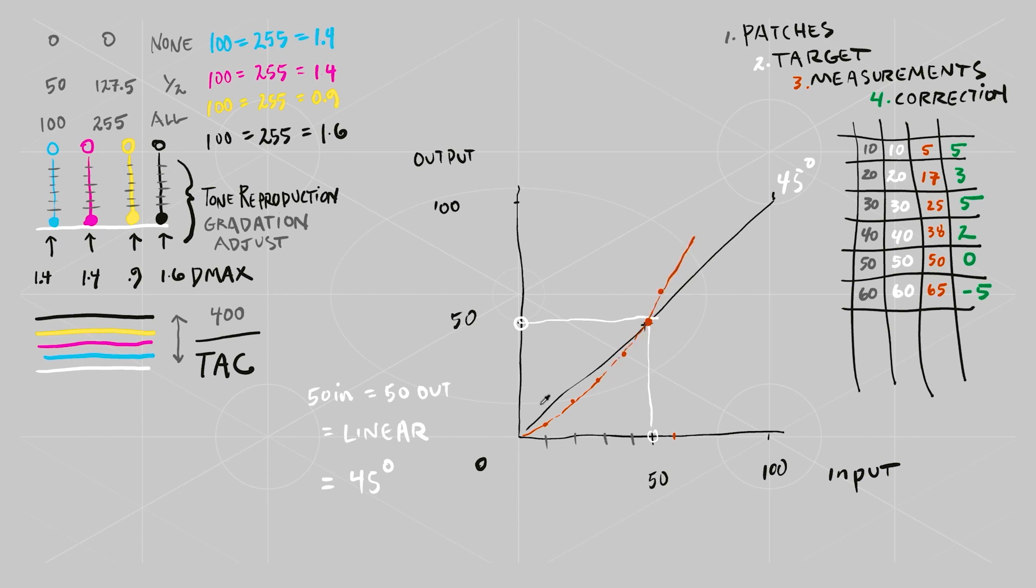Now we start to plot in green the correction values. Plus 5, plus 3, plus 5, plus 2, 0, minus 5. Now you can see the shape of the correction curve.